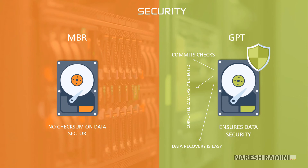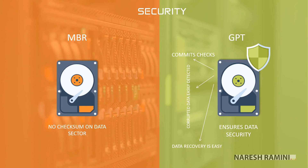When it comes to data security, there is no checksum on data sectors on MBR drives, whereas GPT ensures data security by committing checks. There is no way to detect corruption of data on MBR drives, whereas data corruption can be easily detected on GPT drives. Data cannot be easily recovered on MBR drives, while on GPT drives data can be easily recovered.